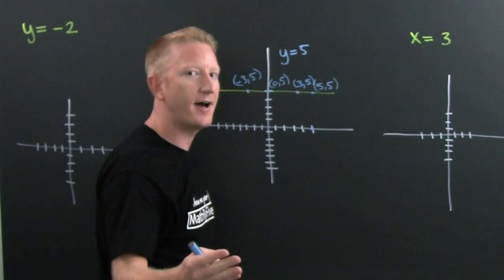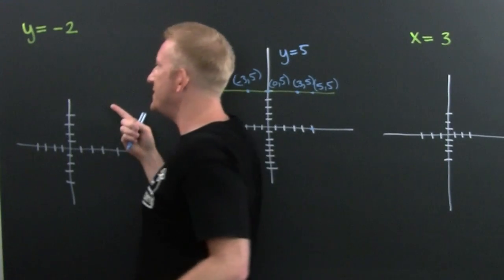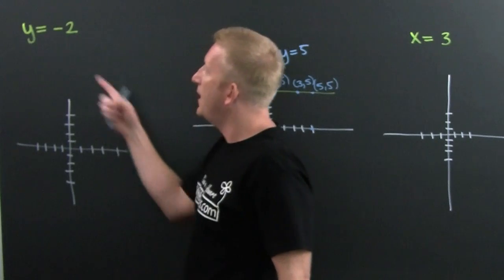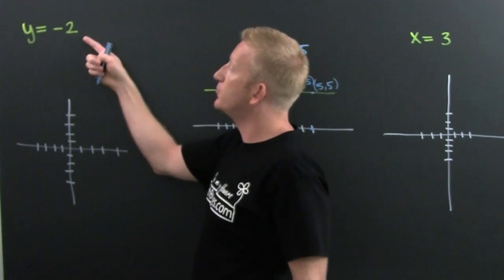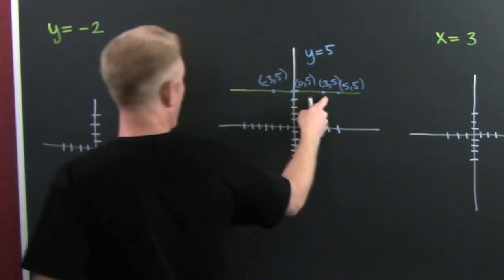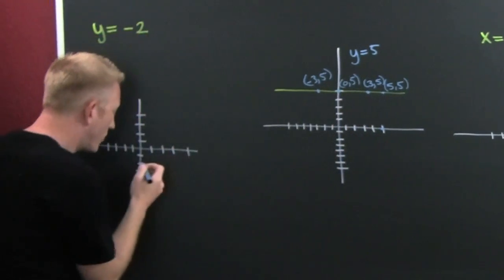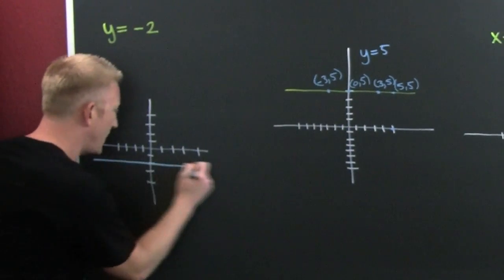Let's go to this example. Oh boy, how do you draw this one? y equals minus 2. Well, you go to y is minus 2 right there. You draw the line. Whoa, a little too far.